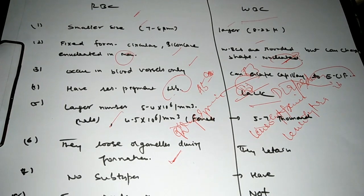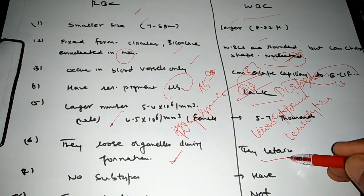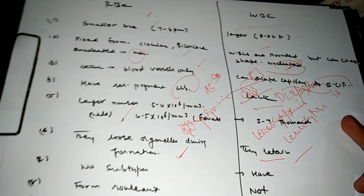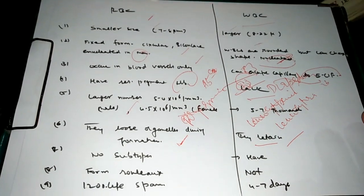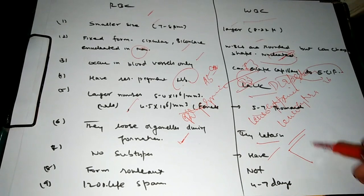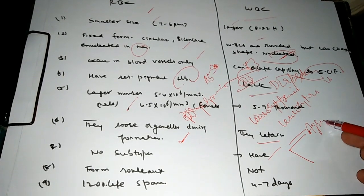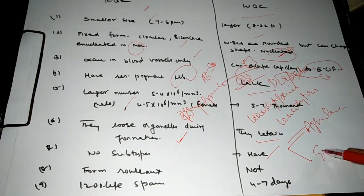The WBC retain all organelles. They do not have any subtype in the RBC. WBC have subtypes: two types, agranulocytes and granulocytes.